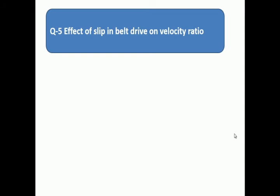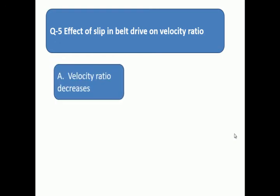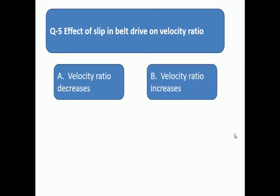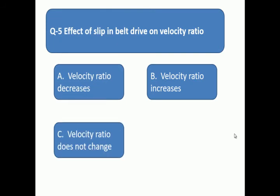Question 5: Effect of slip in a belt drive on velocity ratio. In belt drive, what is the effect of slip on velocity ratio? A: velocity ratio decrease, B: velocity ratio increase, C: velocity ratio does not change, D: none of above.